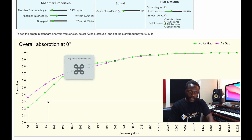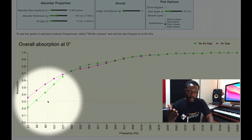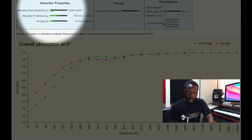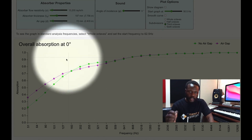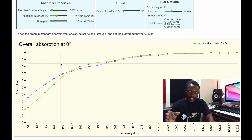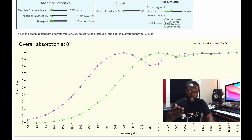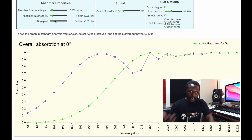For example, take a panel of two inches with a flow resistivity of around 10,000 Pascals per square meter. When you play around with porosity and thickness you can see how these parameters are linked, and this is why some panels perform better than others.